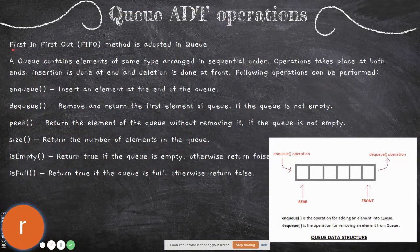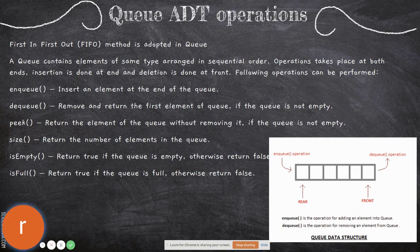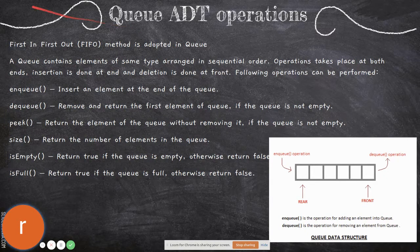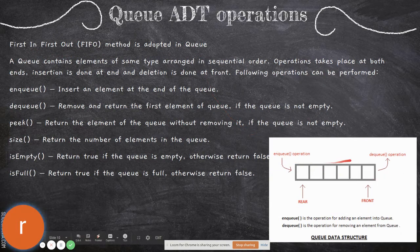Likewise, queue is where you adopt the First In First Out method. In a cinema theater or an interaction shop, people stand in a queue. The first person who comes will be first in the queue, the next person stands next, and so on — the last person stands at the end. The first person at the front will be served first. That is why this method is called First In First Out — the person who enters the queue first will be the first one out.